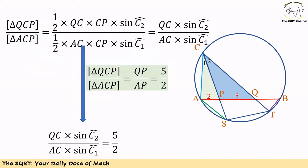Now let's focus on two triangles: one in blue and one in green. We calculate the areas using the sine formula. The area of the blue triangle QCP is one-half times QC times CP times sine of C2. The area of the green triangle is one-half times AC times CP times sine of C1. Canceling the common factors of one-half and CP, the ratio of the areas equals QC times sine of C2 over AC times sine of C1.